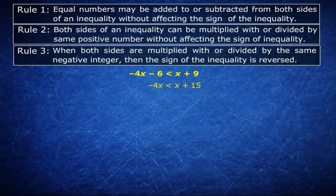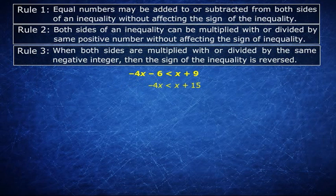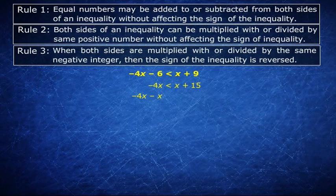Let us now subtract x from both the sides. And the inequality becomes minus 4x minus x is less than x plus 15 minus x which reduces to minus 5x is less than 15.